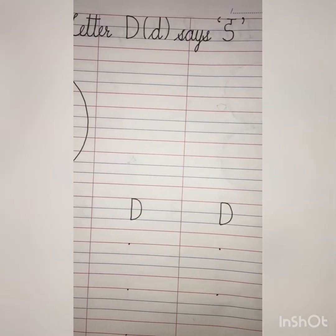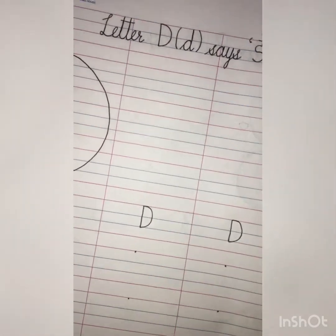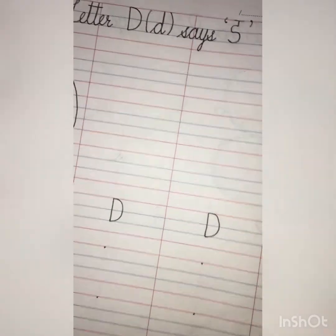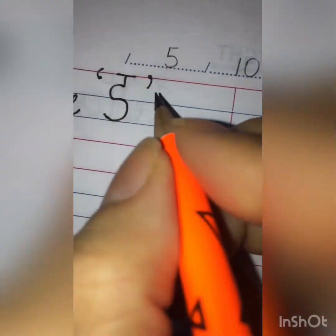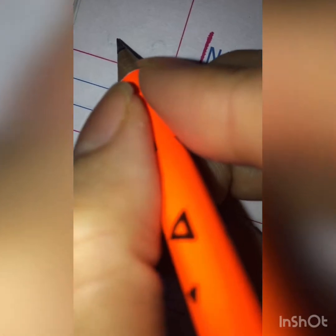So now, children, let us do the work in our notebook. But before writing, let us write the date. So, what is the date today? Today is 5th October. And here, you have to write C.W. Okay?